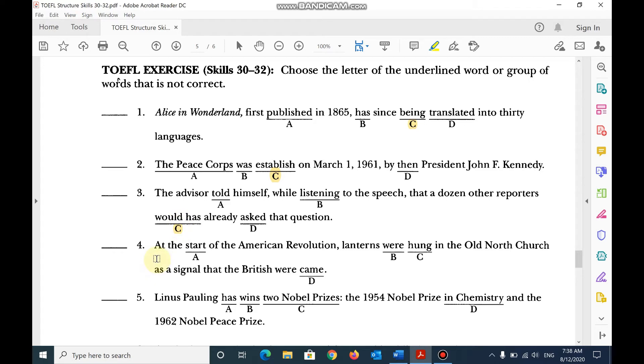Number 10, at the start of the American Revolution, lanterns were hung, hang, hung, hung, okay, as a signal that the British were coming. Number 5, Linus Pauling has wins, has won.